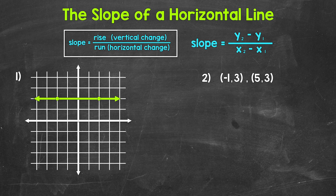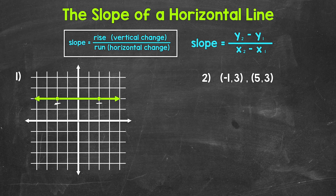Let's jump into number one where we have a horizontal line graphed on the coordinate plane. Remember, slope measures the steepness of a line — how much a line moves up or down as it moves from left to right. Here we can see that this line isn't moving upward or downward at all. Let's find the slope using two points on the line. The slope equals the rise over the run — the vertical change over the horizontal change.